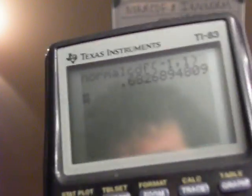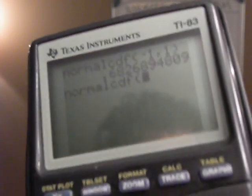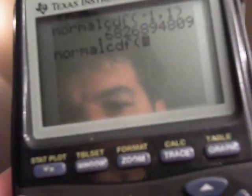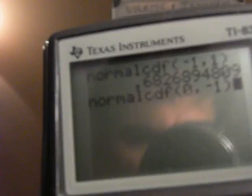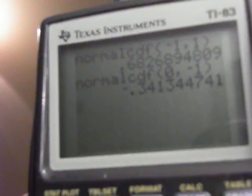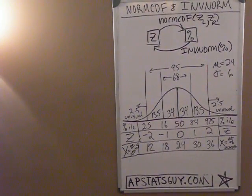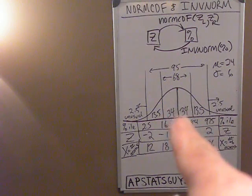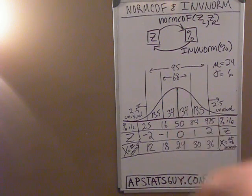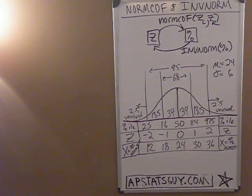Let's see what's between a Z-score of 0 and negative one. Second DISTR 2, normcdf(0, -1). Enter — 34% between 0 and negative one. So you can see this is happening. I can put any of these values into normcdf.